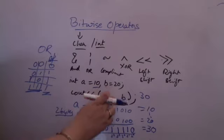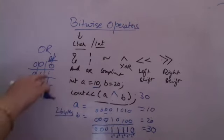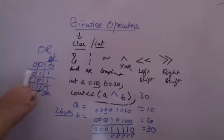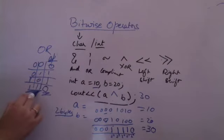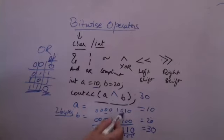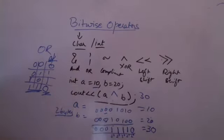Now let's take bitwise XOR. XOR means exclusively OR: whenever there is an odd number of 1s the output is 1; if both bits are the same the output is 0. So 0 XOR 0 = 0; 0 XOR 1 = 1; 1 XOR 0 = 1; 0 XOR 1 = 1; 1 XOR 0 = 1; 0 XOR 0 = 0. A XOR B in this case will give you 30.